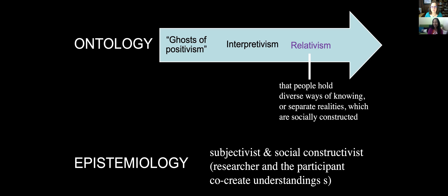In hard sciences, there's the ontology that things are connected and you can find out truth easily. I then went into education where there's still that thinking, but I realized it didn't work — the students in front of me had emotions about their previous science learning, so I had to teach differently. I realized I'd moved to interpretivism. And then for this project, I realized there were a couple of other dynamics: it's about us aging and our own histories and stories. I realized I was grounding this on relativism — that people hold diverse ways of knowing or separate realities, which are socially constructed.